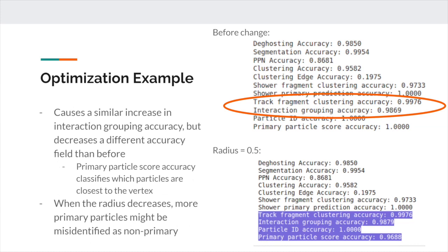I also tried decreasing the orphan radius from its original value and found that when I did this, the interaction grouping accuracy increased in a similar way to when the radius was increased, but instead of the track fragment clustering accuracy decreasing, the primary particle score accuracy decreased. The primary particle score accuracy determines which particles are closest to the vertex, so when the orphan radius was decreased, some primary particles would have been misidentified as non-primary. This result would be ideal for when the primary particles are not the focus of analysis.